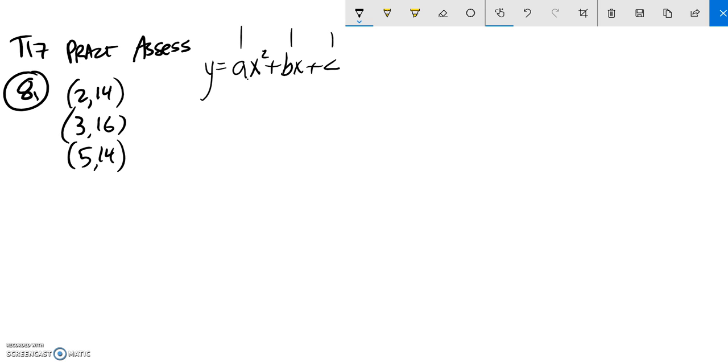And so we want to find the A, B, and C values here. And the way we're going to do it is we're going to plug in these points and get three different equations to solve for the three different variables.